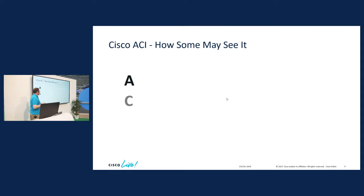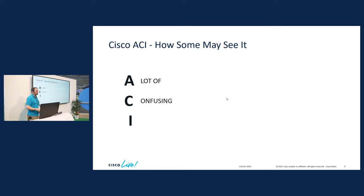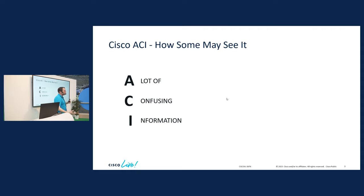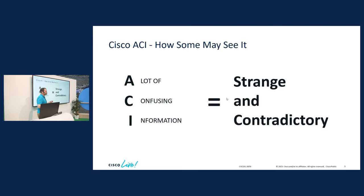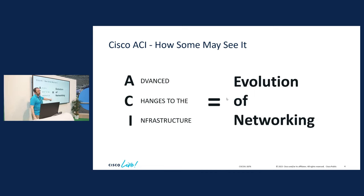So I came up with an acronym. What does ACI stand for? Application-Centric Infrastructure. But it might feel like it stands for this: A lot of confusing information. Different terms, different words. You hear things like 'forget everything you know about networking,' which is not true, by the way. So it can be a little disorienting because it's not familiar — it's very, very different. But having spent a lot of time with ACI, it's really just the next evolution of networking.